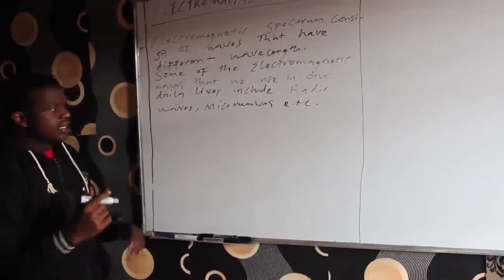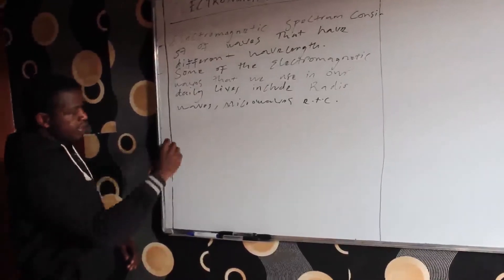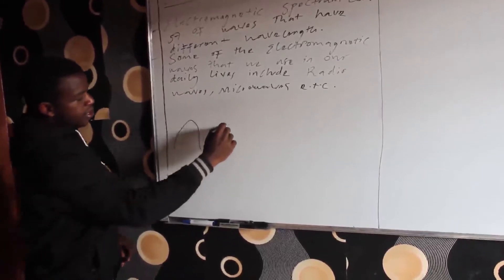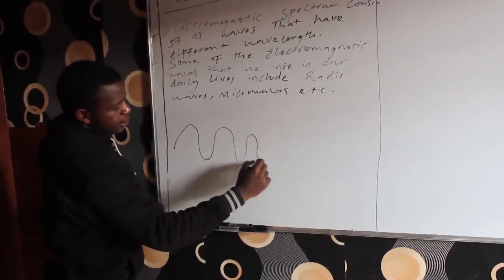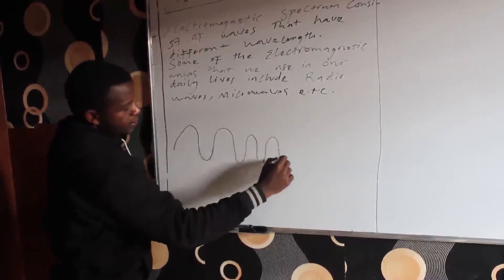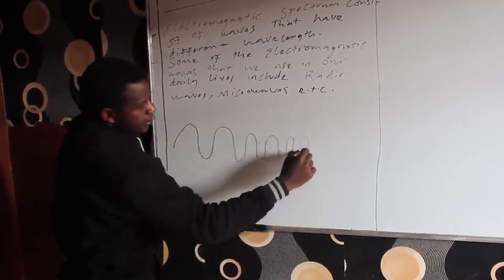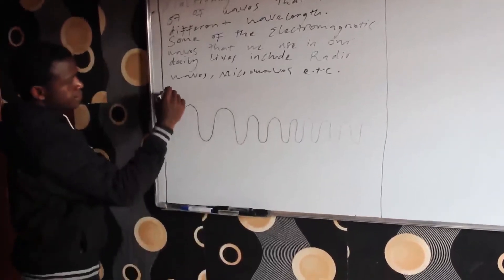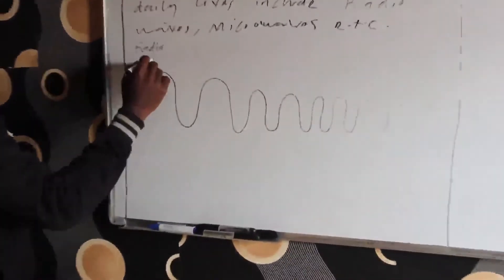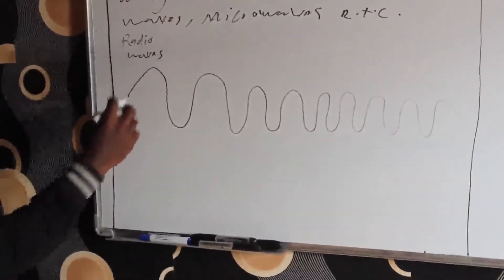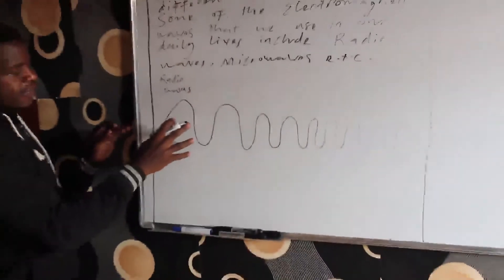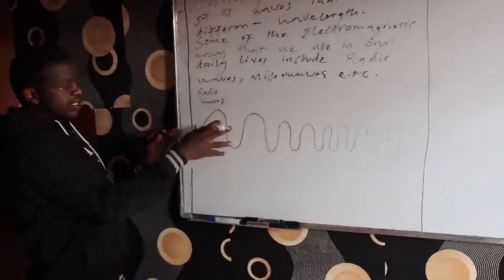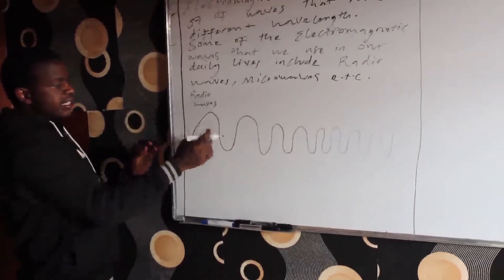This is how the sequence is arranged. As I draw, these are representing the wavelength. The radio waves have a large wavelength, as you can see.